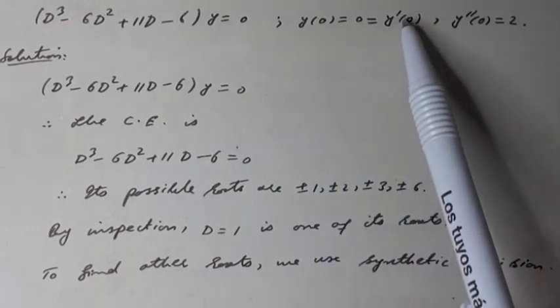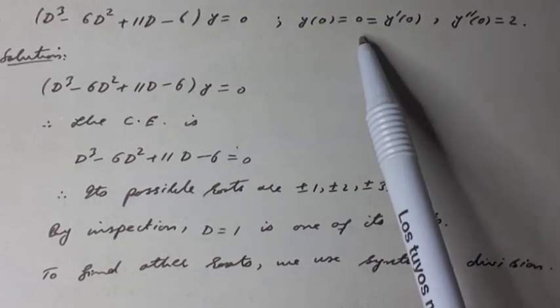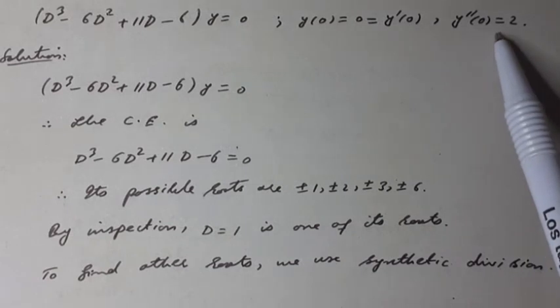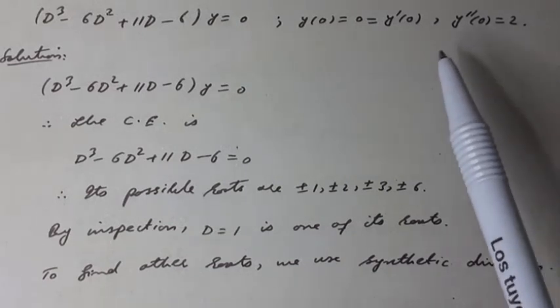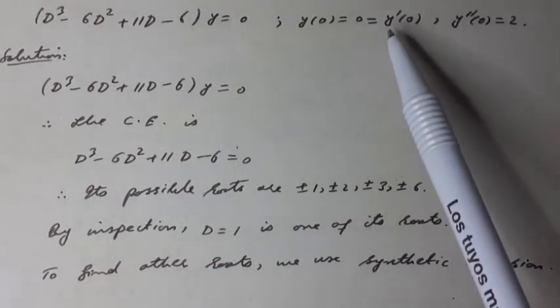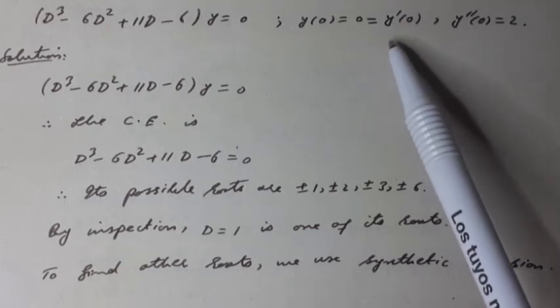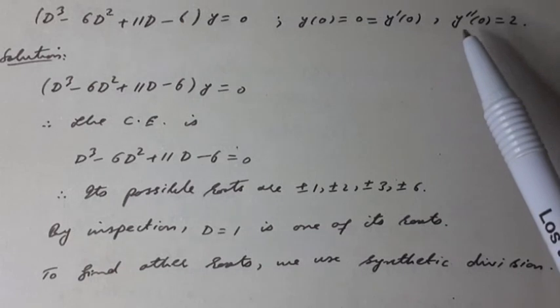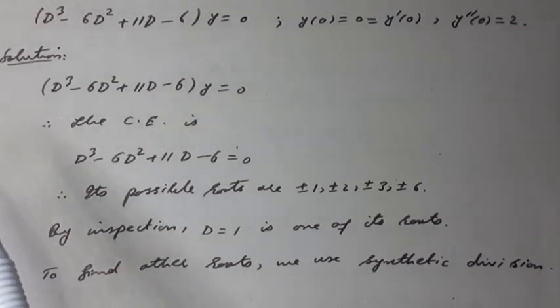And also y dash at x is equal to 0 equal to 0, y double dash at x is equal to 0 equal to 2, where y dash or y prime denotes the first derivative and y double dash or y double prime denotes the second derivative. Solution: